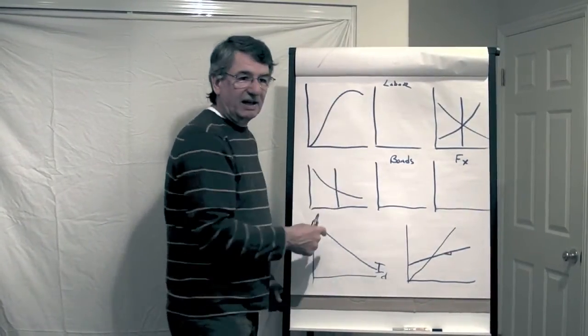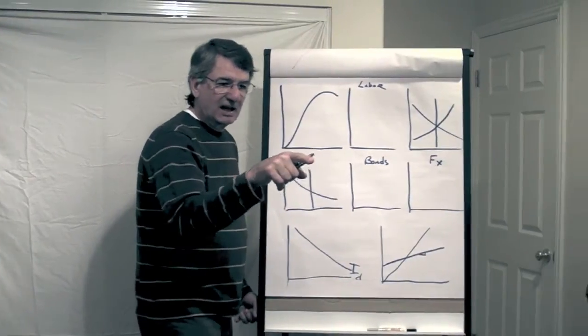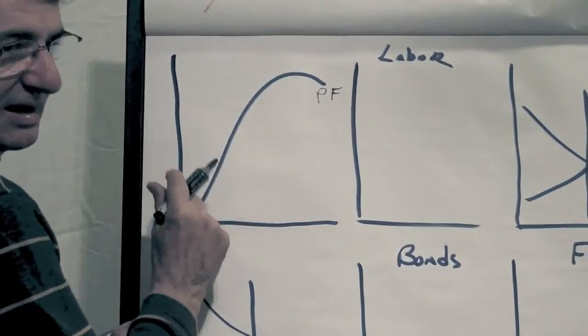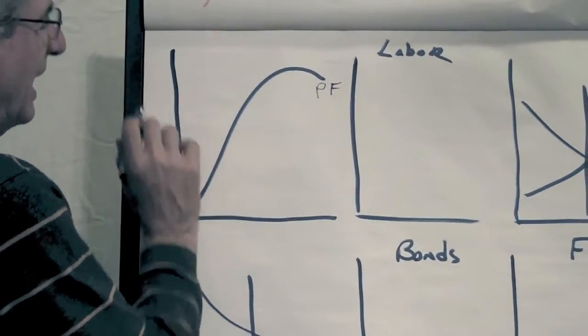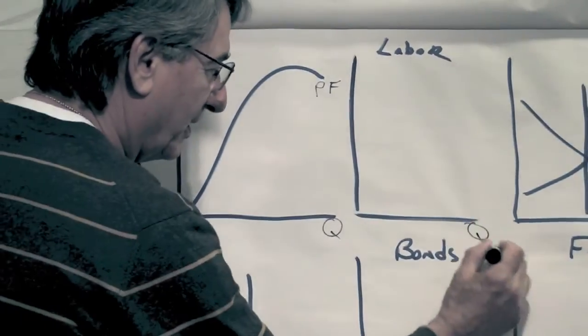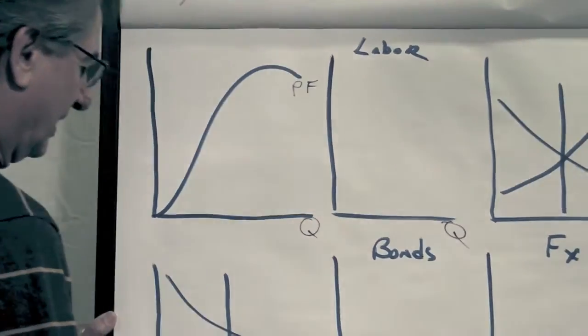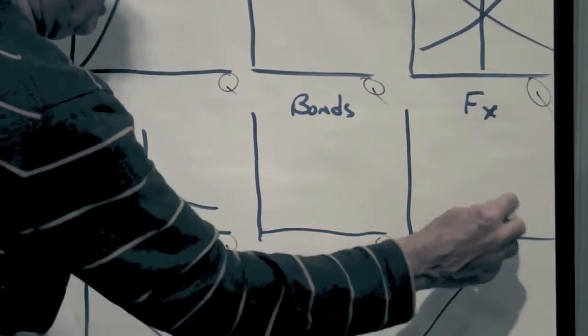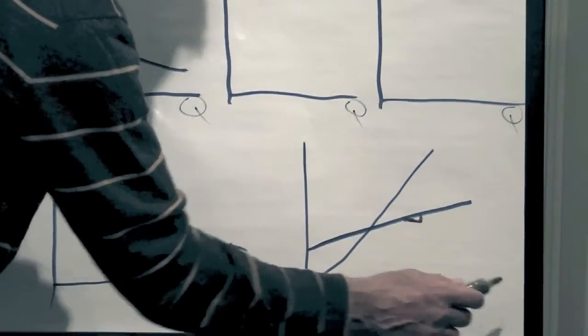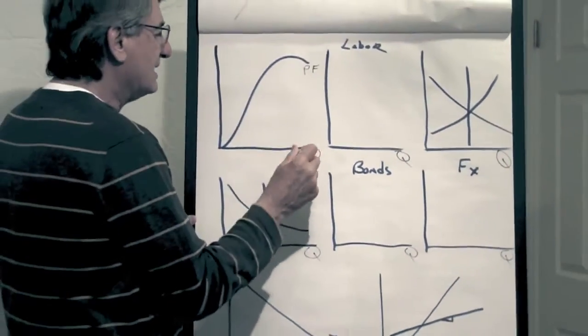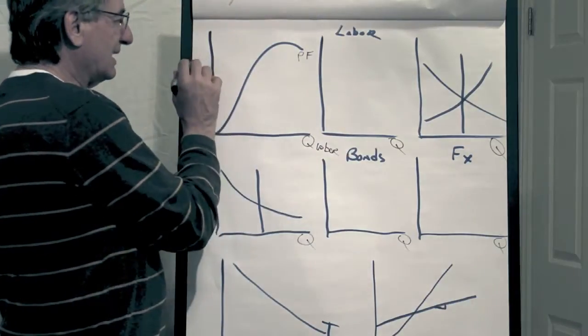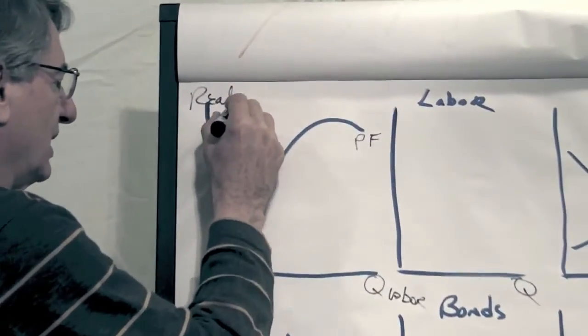Alright this is my favorite. It is the production function. And on the horizontal axis we have quantity of something. They're all quantity for the most part - there's quantity, quantity, quantity - but they're all different quantities. So this is the quantity of labor. This is real GDP.